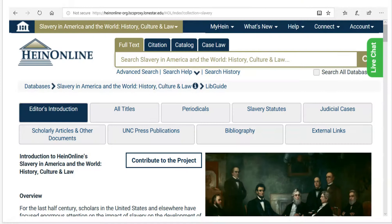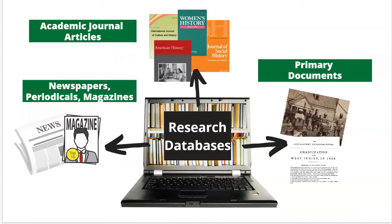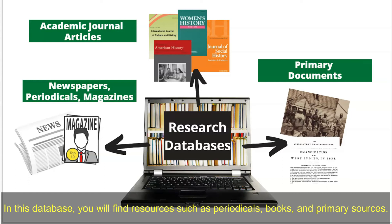This database is produced by a company called Hein Online that specializes in providing access to historical legal documents and materials. A database is an online collection of millions of research sources, most of which you will not find for free on the open web. In the Slavery in America and the World database, you will find resources such as periodicals, books, and primary sources.